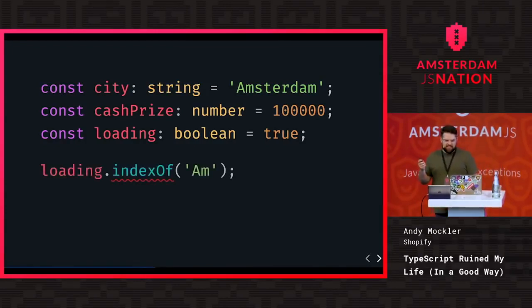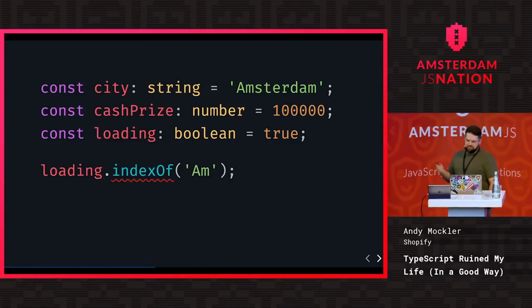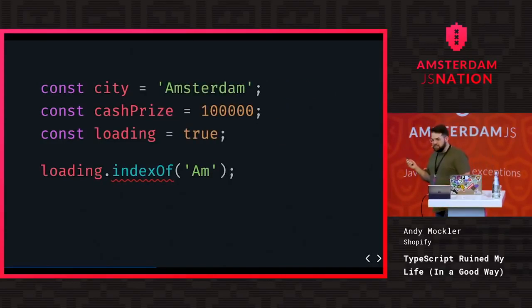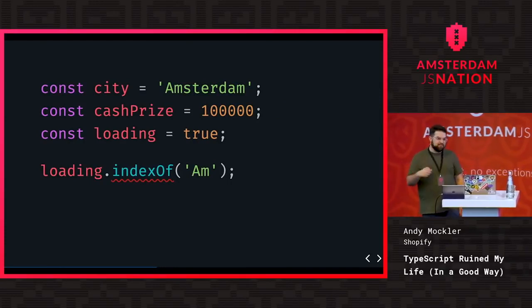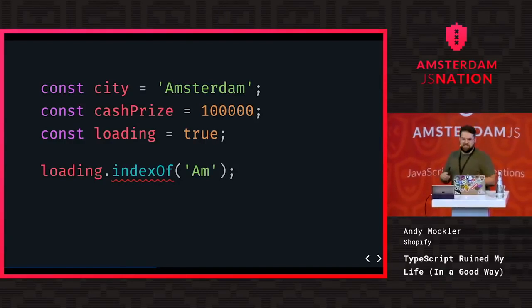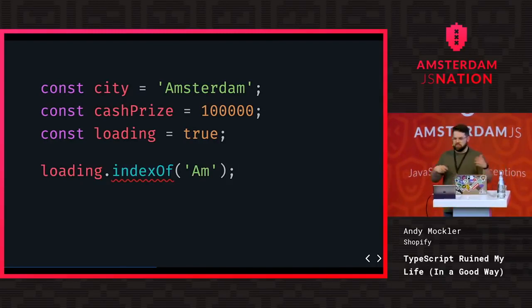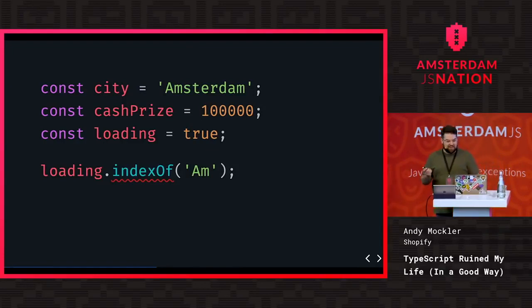You can see a red squiggly in VS Code — it's telling me I can't call indexOf on a boolean. But TypeScript is a little smarter than that: it can actually infer the types. Just by assigning it to a string, number, or boolean, it can learn that loading is still a boolean and gives me that helpful hint. Even as I reassign the variable, it keeps track of what types it could be.